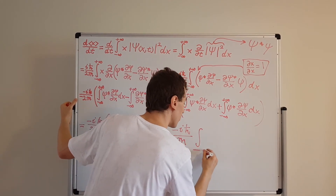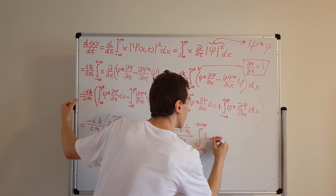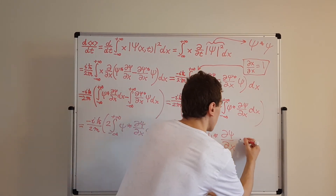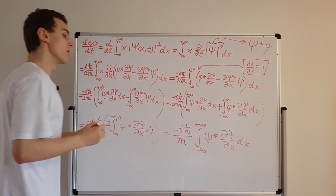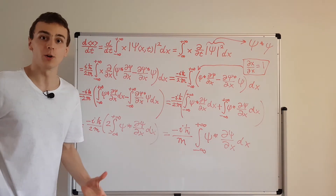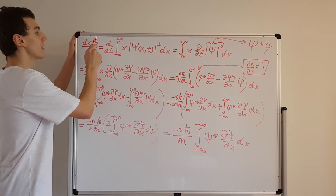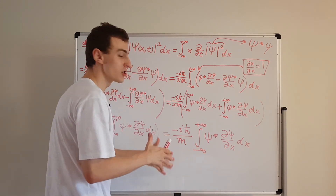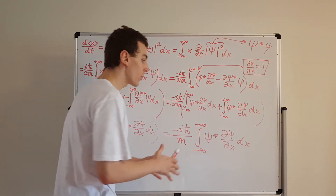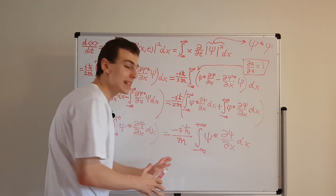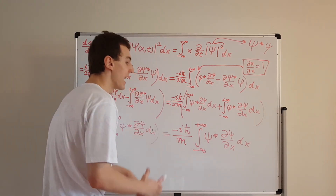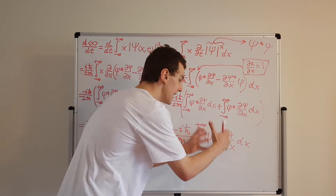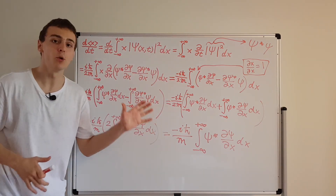This final expression is the goal of this video: we have linked the time derivative of the expectation value of x to minus i*h_bar over m times the integral of psi star d(psi)/dx. This should look familiar if you've seen the momentum operator. In the next video we will multiply through by mass to cancel the m, then move minus i*h_bar inside the integral to form a sandwich — and that is how we define the momentum operator.